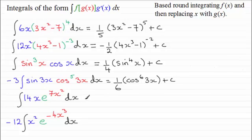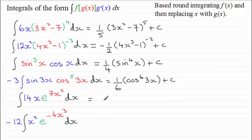For this exponential one, f of x was e to the power x. Integrating e to the power x is e to the power x. We replace x with g of x — 7x squared — so we end up with e to the power 7x squared, plus the constant of integration C. Very straightforward.